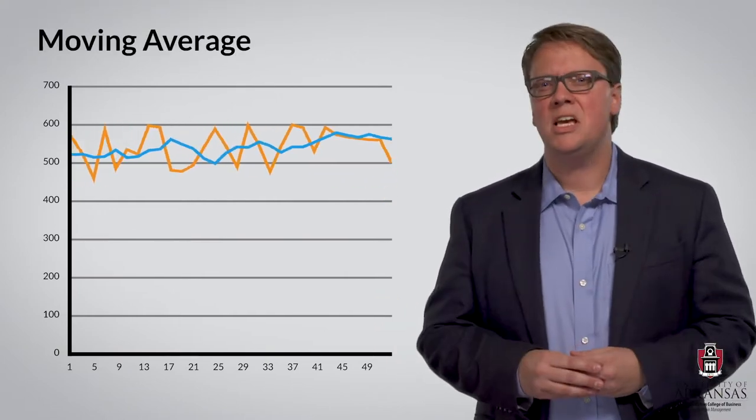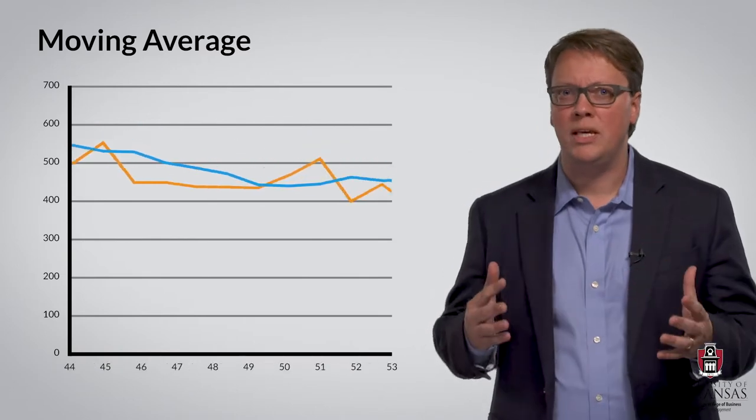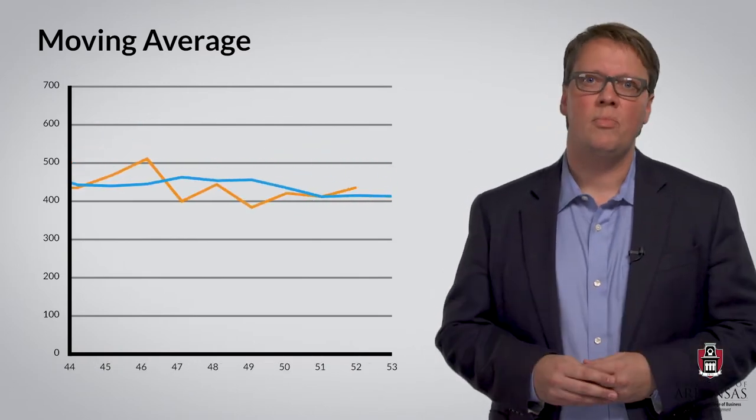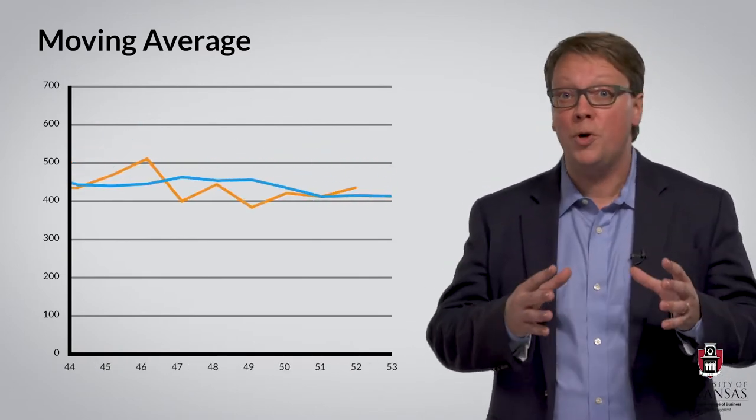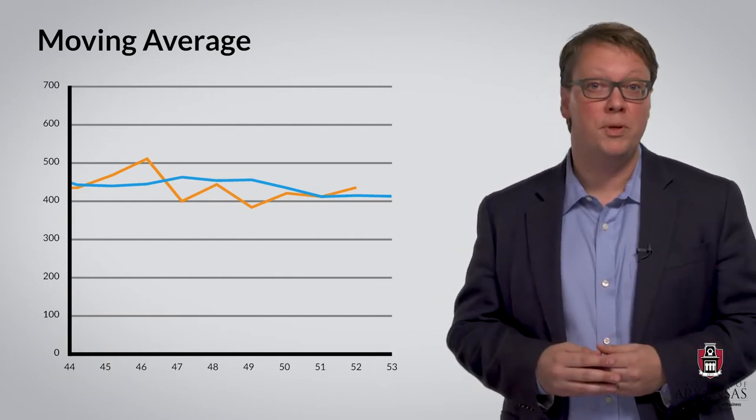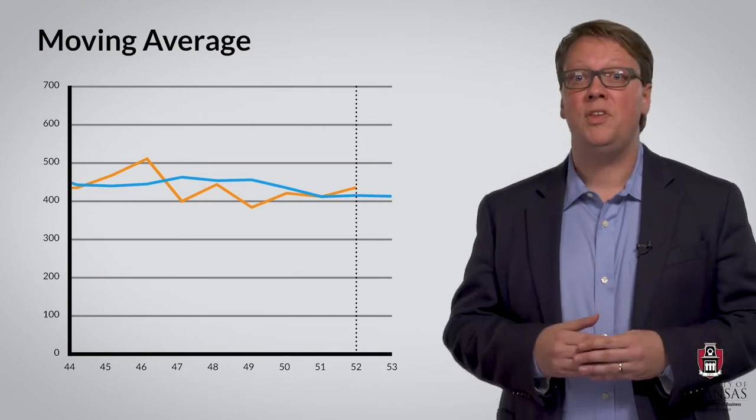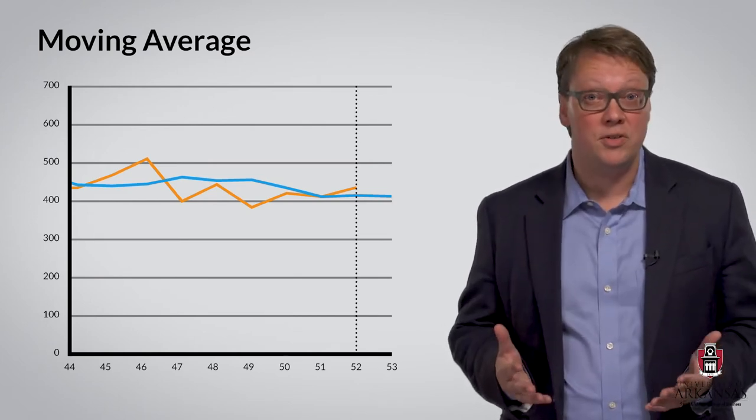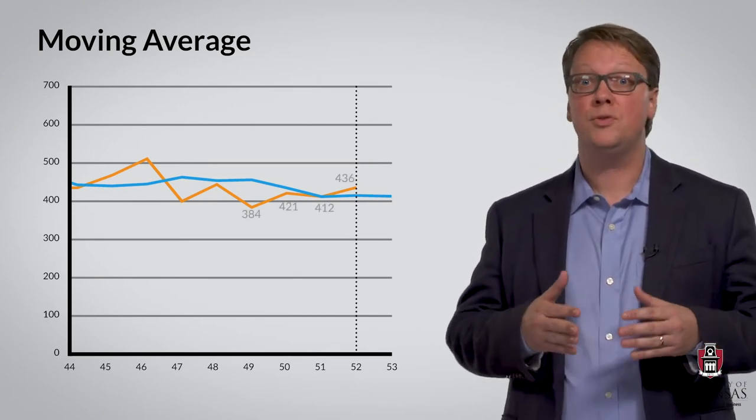Let's zoom in and take a closer look at the last 10 weeks in this data set. If we use a simple four-period moving average forecasting technique, our forecast for period 53 will be the average of the demand observations for periods 49 to 52.